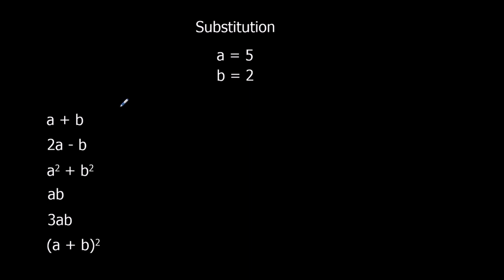Whenever I substitute, I'm going to put brackets. So here I've got A, and I'm going to write this with brackets around it. So A becomes 5 and B becomes 2. The reason I'm putting brackets is when we use a calculator, it makes sure there's no mistakes. So 5 plus 2, that's 7.